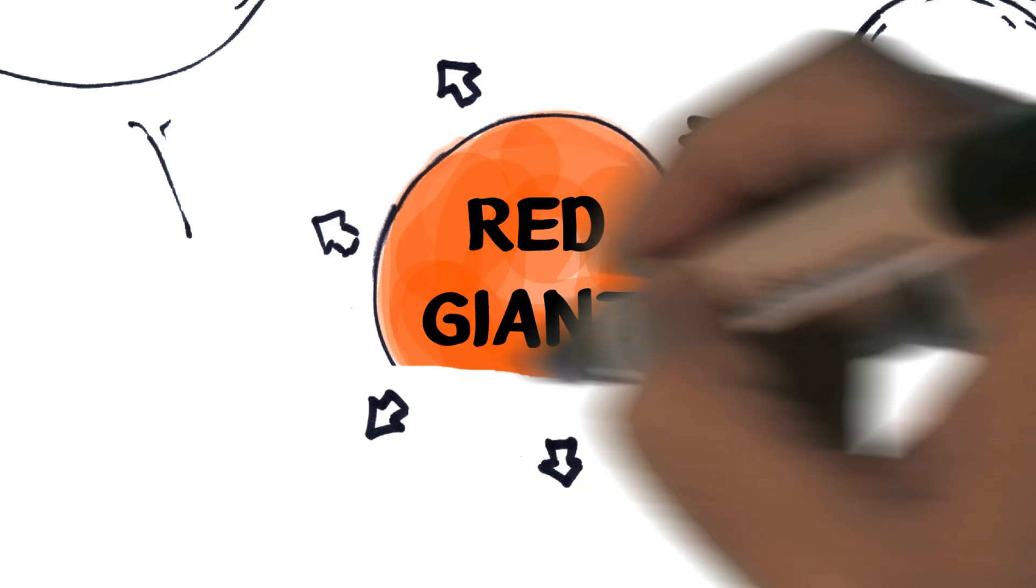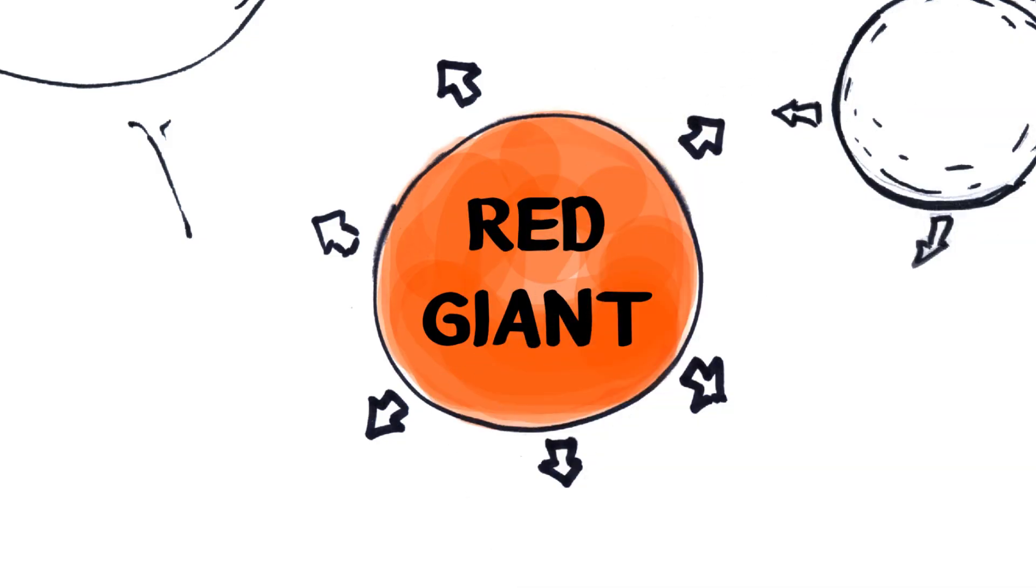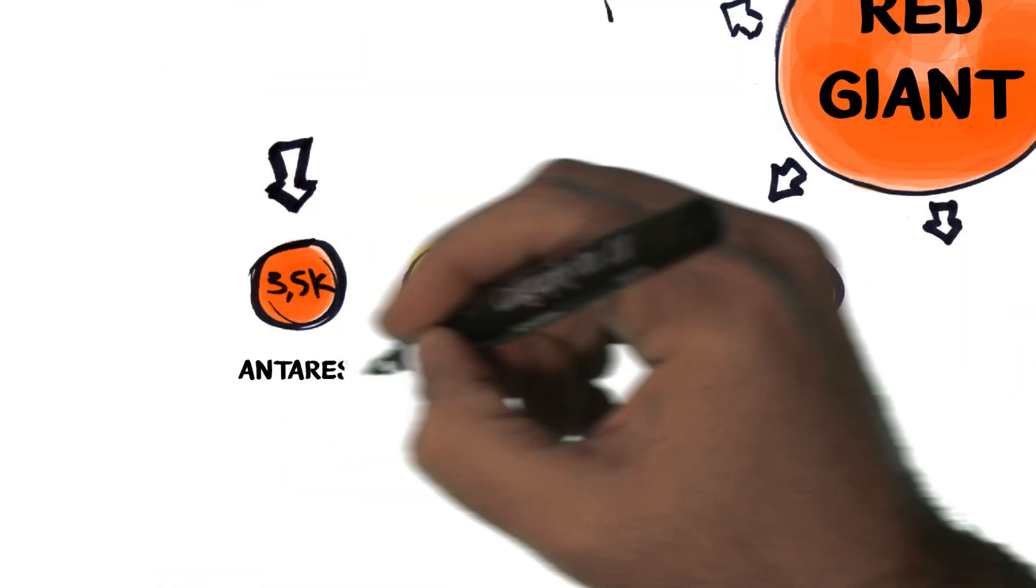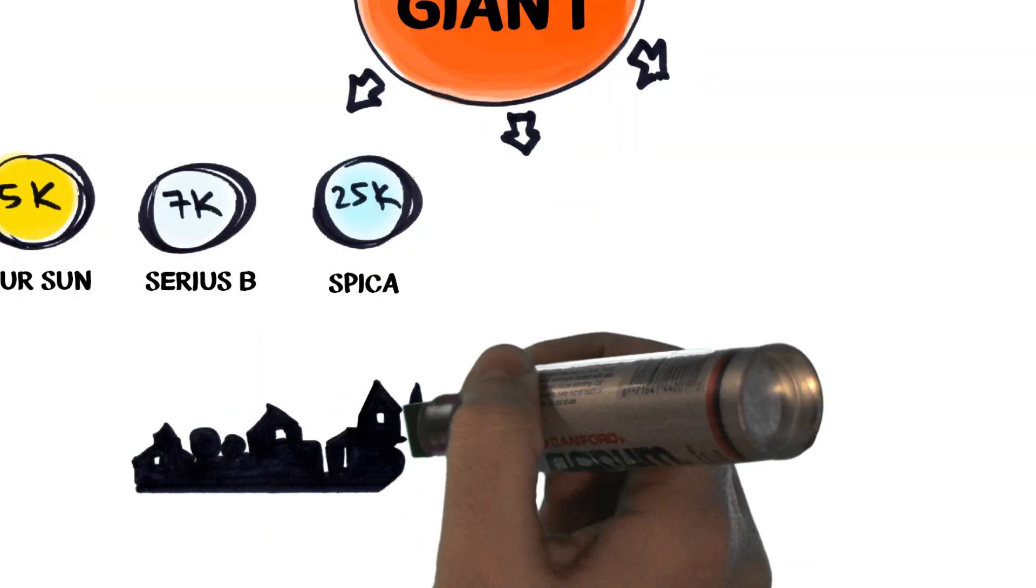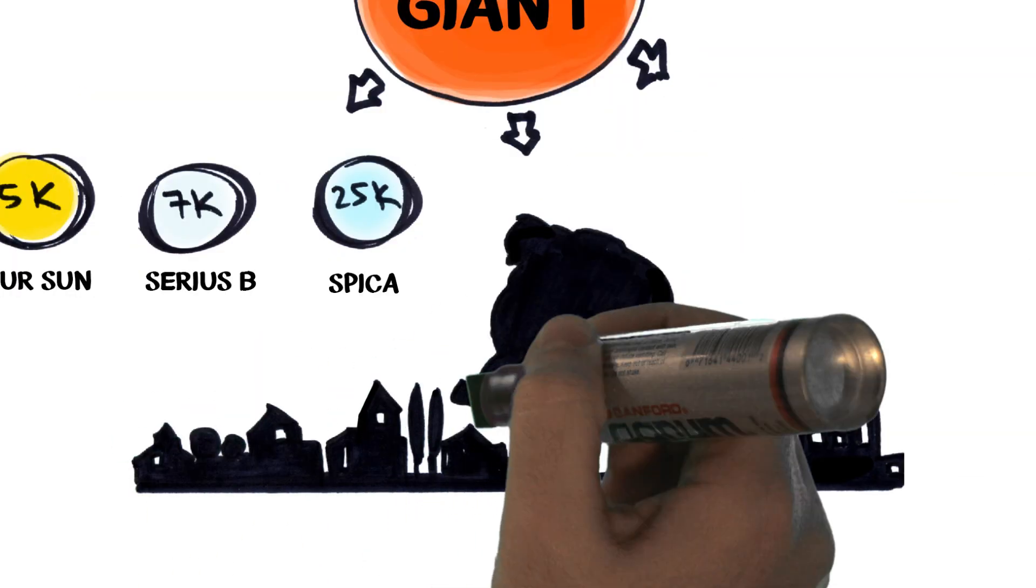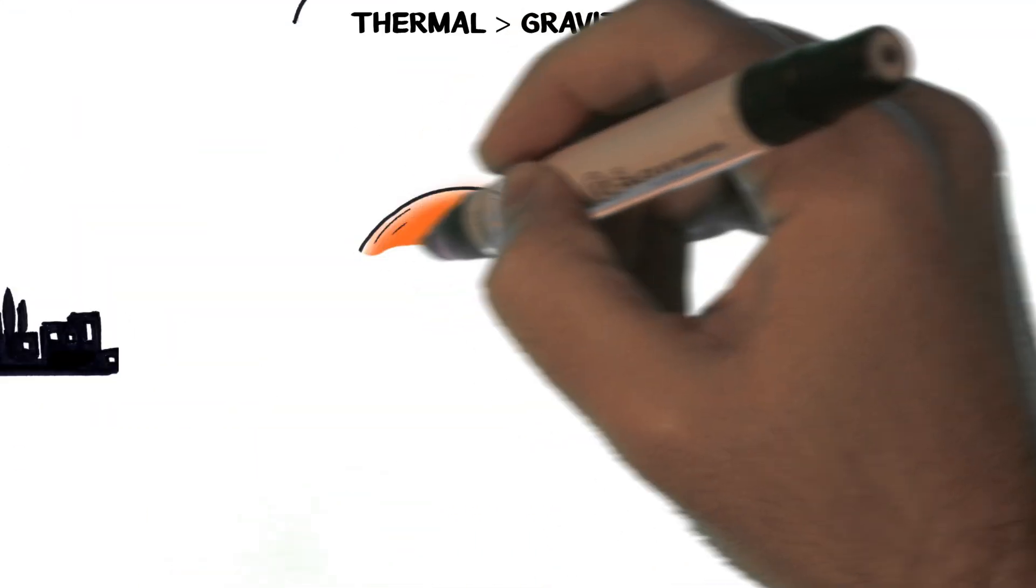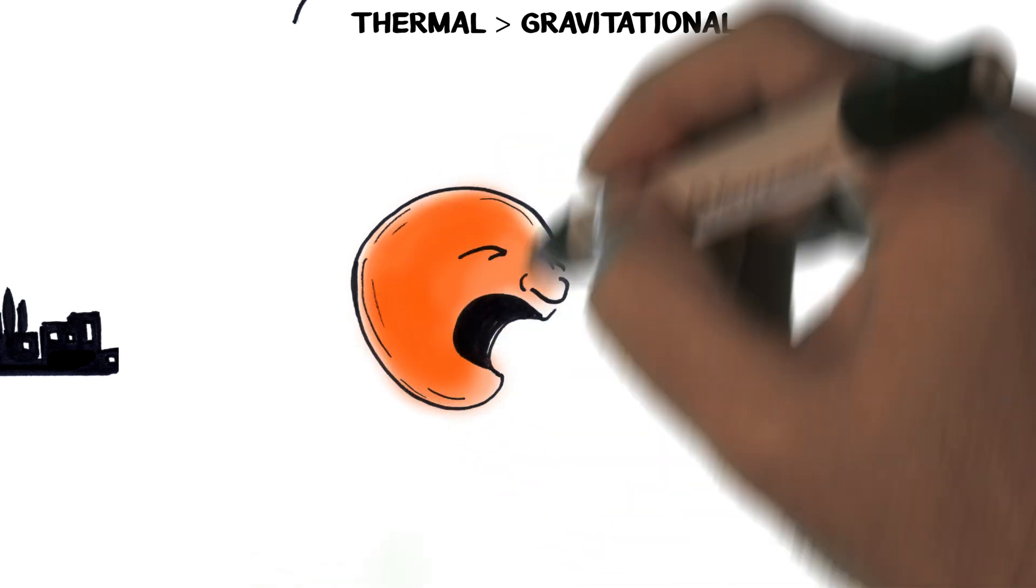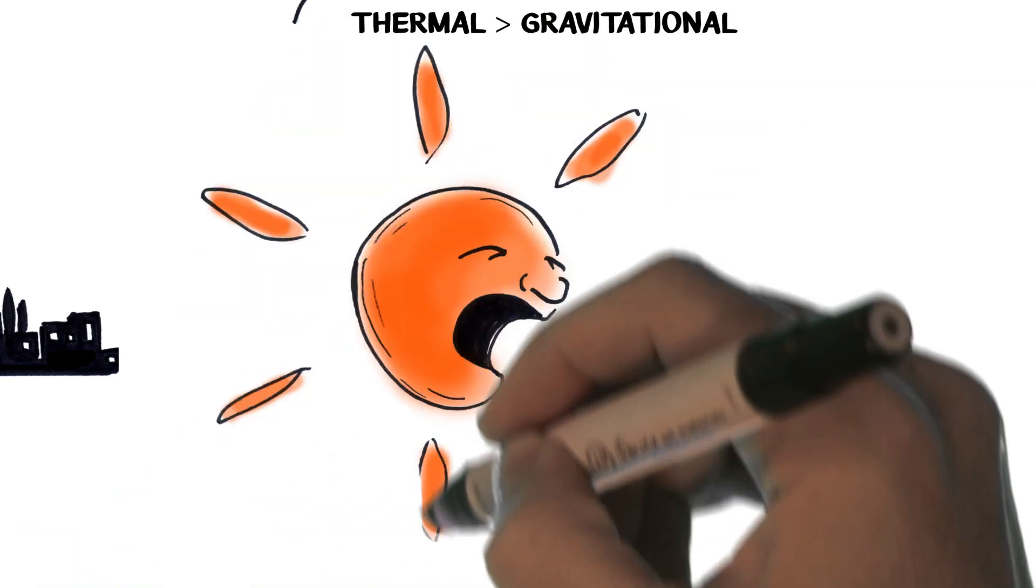These larger, cooler stars are called red giants. Red, because they are cooler. Giants, because they are very large. As our Sun turns into a red giant, it will engulf the innermost planets of our solar system, including Earth.